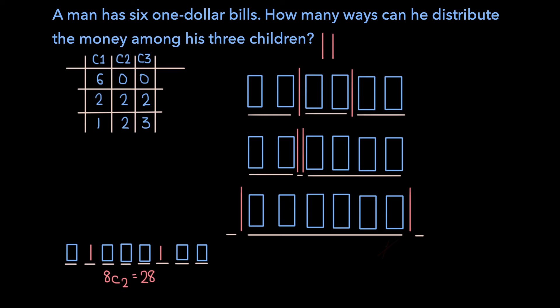And so just to recap, there are 28 different ways we can place the two dividers in these eight spots. And each of these ways represents a way the man can distribute the money among the three children. And so 28 is our answer, and that's really all there is to this problem.